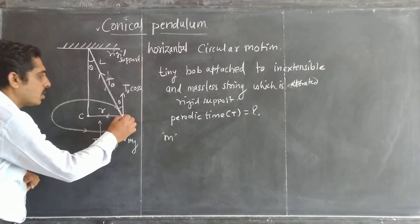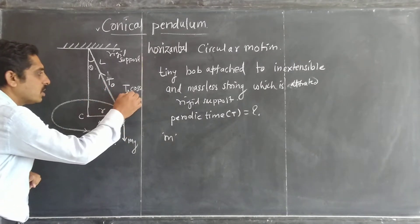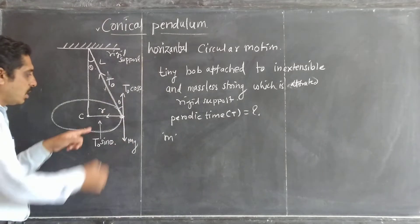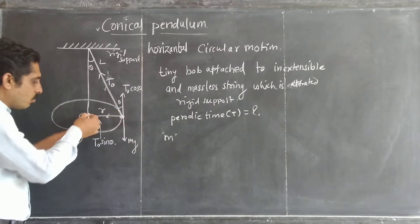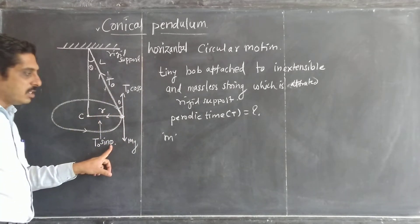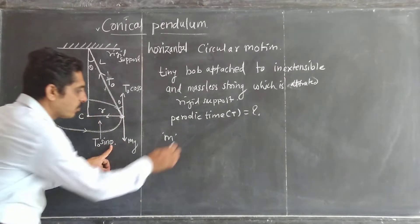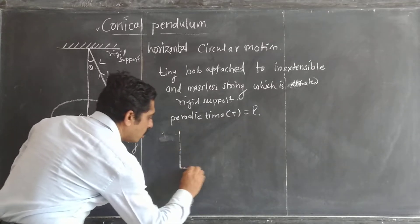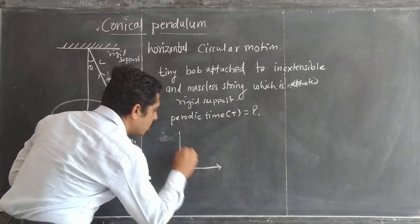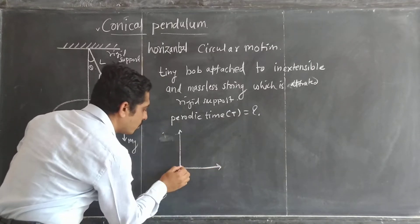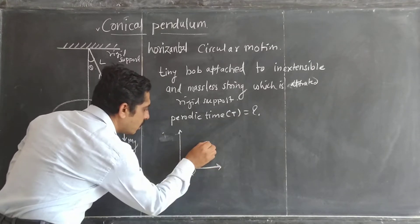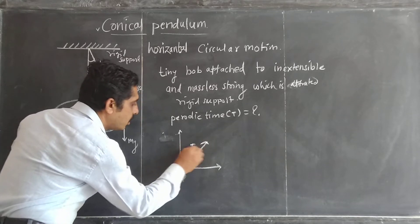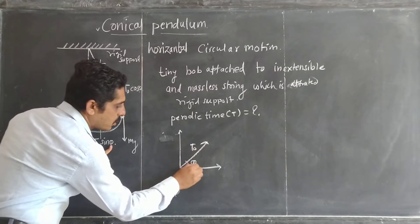We can resolve the tension T₀ into its components. The vertical component is T₀ cos theta and the horizontal component is T₀ sin theta.